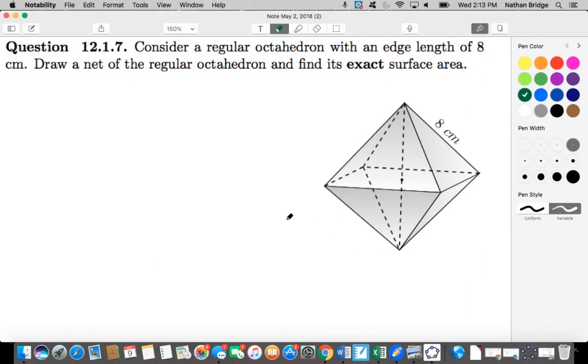So this is 12.1.7. Consider a regular octahedron, eight-sided figure, eight-sided three-dimensional figure with an edge length of eight centimeters. It says draw a net of the regular octahedron and then find the exact surface area.